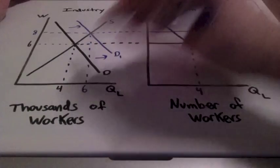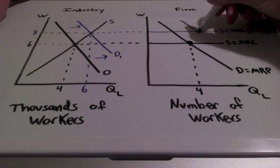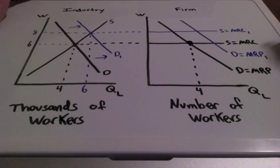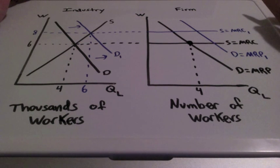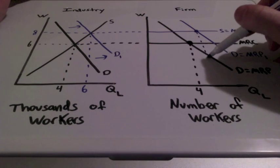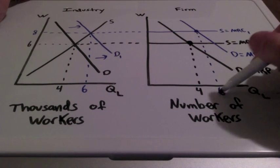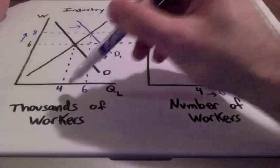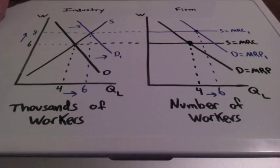Since the demand curve shifts to the right, we have a new supply curve of labor equal to marginal resource cost 1. The firm's marginal revenue product and demand curve also shift to the right, giving us marginal revenue product 1. We find our new intersection where marginal resource cost equals marginal revenue product, and the firm is going to hire labor at this intersection. The number of workers increases from 4 to 6 because the wage increased from $6 to $8, and industry workers increased from 4,000 to 6,000. The increase in demand will increase both wages and the quantity supplied of labor.